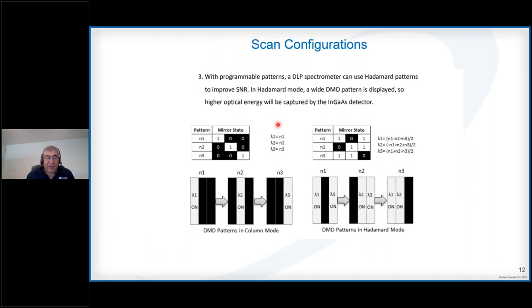Here's a quick comparison of the Hadamard and Column. In case of Column, only one of the mirrors in each column is turned toward the detector, as you can see here. But in case of Hadamard, you have more than one mirror turning towards the detector, so Hadamard will have a higher throughput and would help the signal-to-noise ratio improvement.